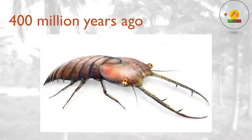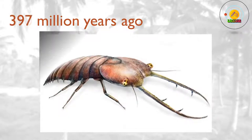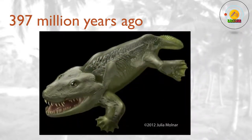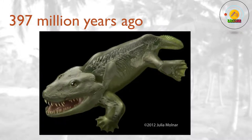400 million years ago? The oldest known insect lives around this time. Some plants evolve woody stems. 397 million years ago? The first four-legged animals, or tetrapods, evolved from intermediate species such as Tiktaalik, probably in shallow freshwater habitats. The tetrapods go on to conquer the land, and give rise to all amphibians, reptiles, birds and mammals.